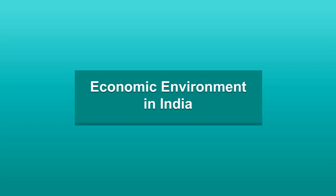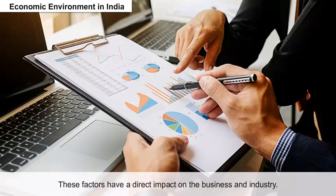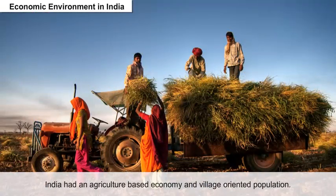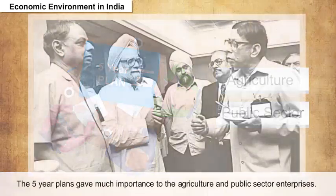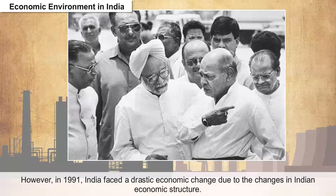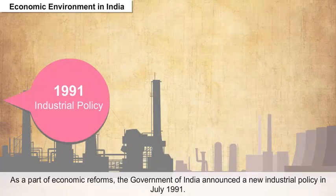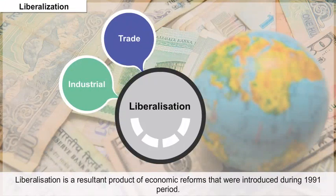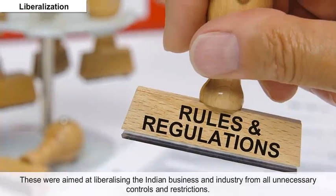The economic environment in India is directed by various macro and micro level factors that have a direct impact on business and industry. During the time of independence, India had an agriculture-based economy and village-oriented population. The five-year plans gave much importance to agriculture and public sector enterprises. However, in 1991, India faced a drastic economic change in its economic structure. As part of economic reforms, the government of India announced a new industrial policy in July 1991, with the main focus on liberalization — aimed at liberalizing Indian business and industry from all unnecessary controls and restrictions.